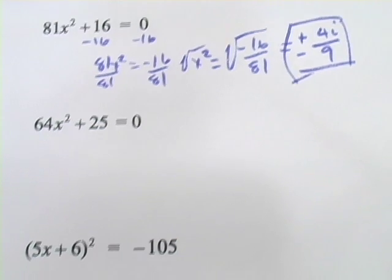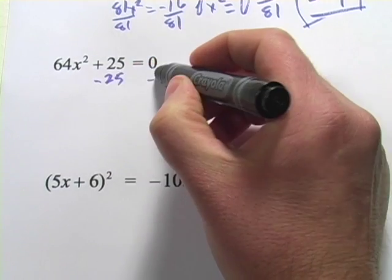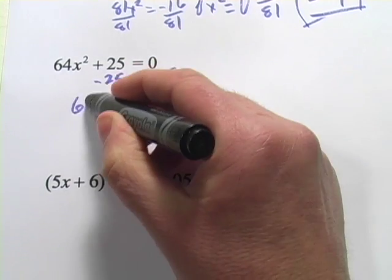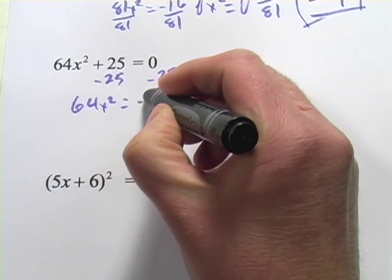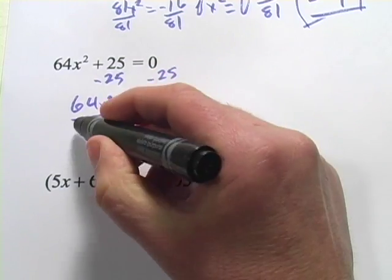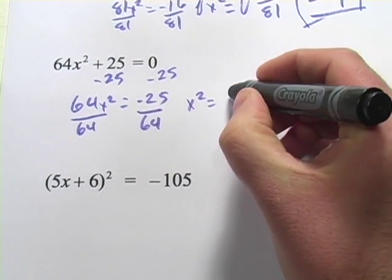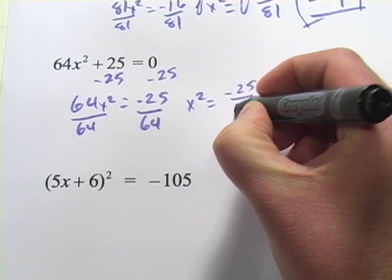Let's try another one. This one's very similar. I'm going to start by getting rid of this constant term by subtracting it from both sides. So I get 64x squared equals negative 25. Then I can get that x squared term alone by dividing both sides by 64. And I get x squared equals negative 25 over 64.